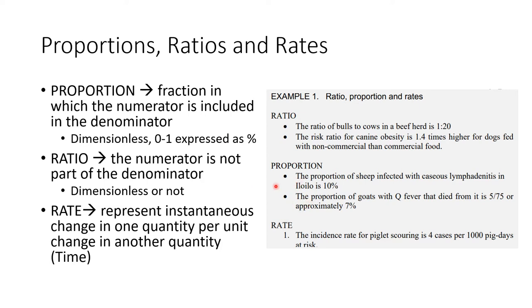For example, a proportion of sheep infected with caseous lymphadenitis is 10% — that 10% with caseous lymphadenitis is included in the sheep population that was studied. Another example: approximately 7% of the goats — 5 of 75 — died from pewfever. Those 5 in the numerator are part of the 75 at risk. Similarly, if 10 of 100 students passed veterinary epidemiology, that's a 10% passing rate — that 10% is part of the 100 who took the class.